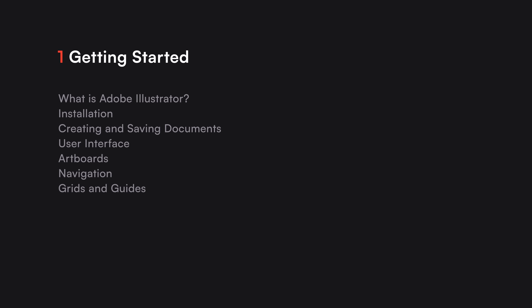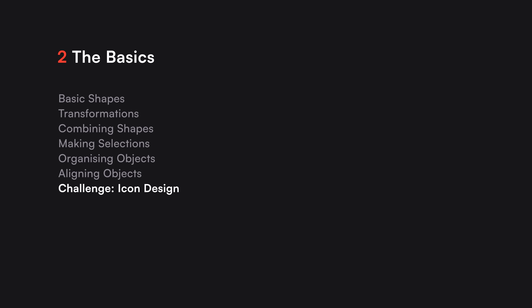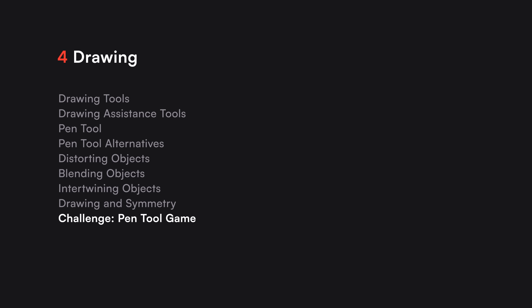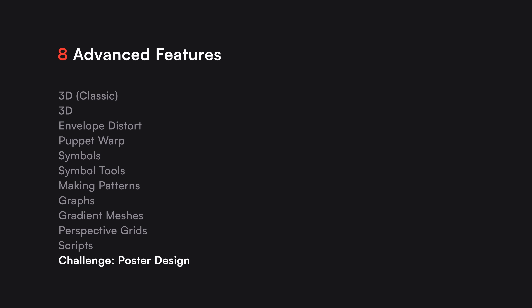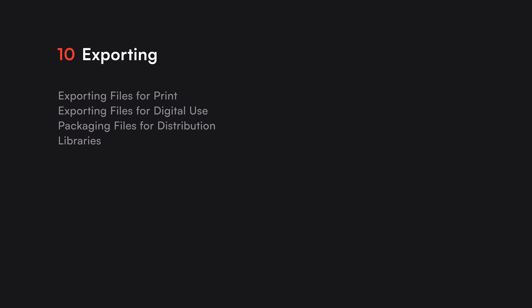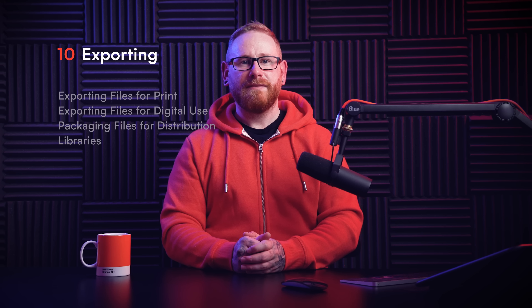This course includes 10 modules at launch. There's a getting started section to familiarize you with the interface, then we cover the basic tools so you can start designing right away. Next we look at colors and appearance effects, followed by a module on tools and techniques for drawing. The next two sections cover working with text and images. Module 7 looks at different types of brushes, then there's a big section on more advanced features, followed by a section on creating popular shapes. And lastly there's a section on how to export your designs for print, digital use, or distribution — with more lessons being added in future.